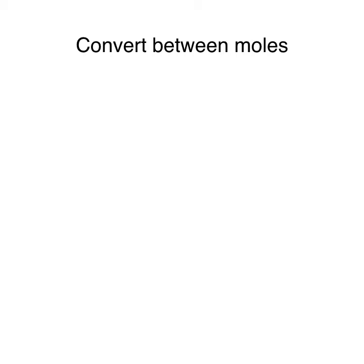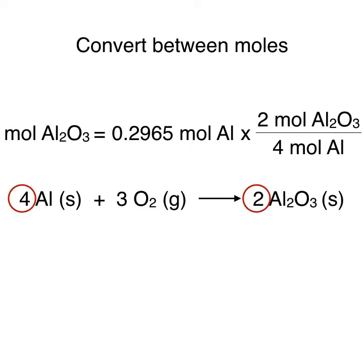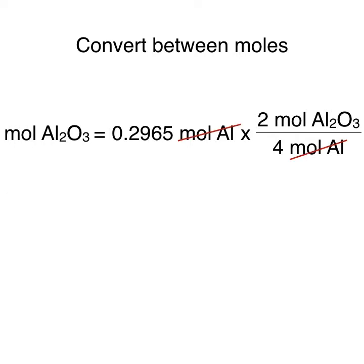Now that we have the moles of aluminum, we can convert between the moles of aluminum and the moles of our desired substance, aluminum oxide, using their molar ratio. We can write the moles of aluminum oxide is equal to the moles of aluminum, which is 0.2965, multiplied by the mole ratio 2 over 4. This is the ratio of the stoichiometric coefficients from the chemical equation. From here, our moles of aluminum cancel out and we're left with 0.14825 moles of aluminum oxide.